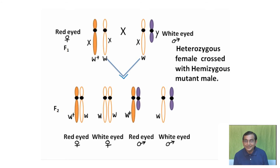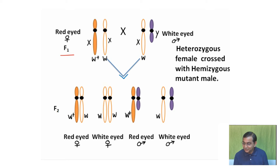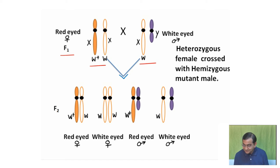In the second cross, Morgan crossed a heterozygous female from the F1 flies of the previous cross with a hemizygous mutant male (XY). In the F2 generation, he obtained half of each sex as red-eyed and half as white-eyed — that is, red-eyed female, white-eyed female, red-eyed male, and white-eyed male.